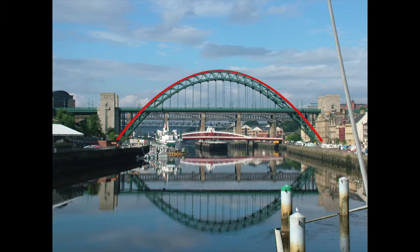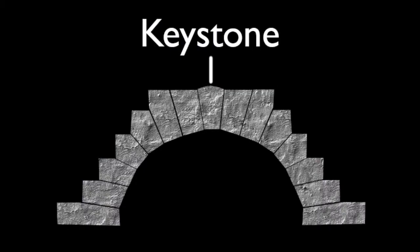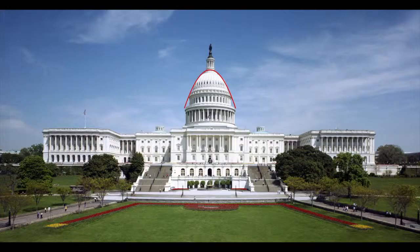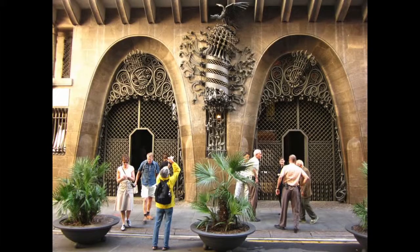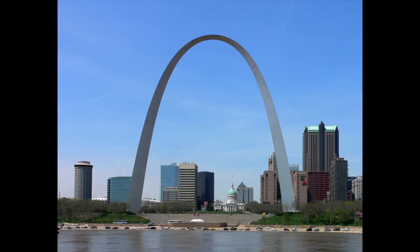One aspect of parabolas is that they are incredibly stable structures. The keystone can support incredible amounts of weight, allowing the construction of domed structures, support arches, and pieces of architecture such as the St. Louis Arch.